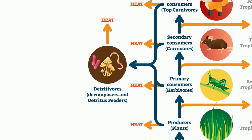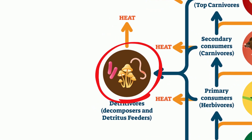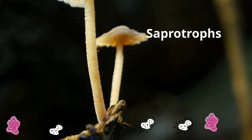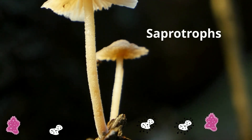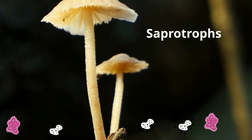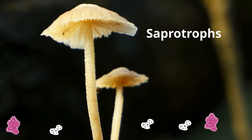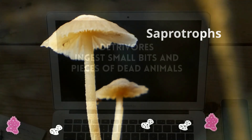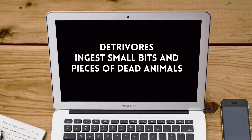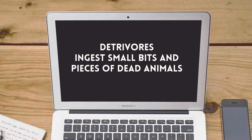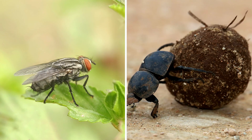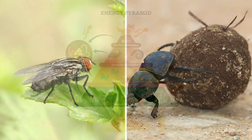Decomposers are also heterotrophs. They are organisms that use enzymes and chemical reactions in order to break down once-living organisms. There are two main types of decomposers. Saprotrophs, which absorb energy from decaying organisms — examples are bacteria and fungi like mushrooms. Detritivores ingest small bits and pieces of dead animals or feces. For example, flies and dung beetles are detritivores.